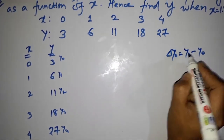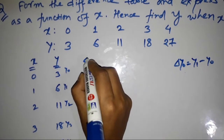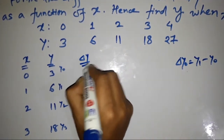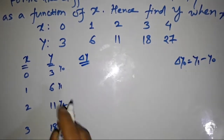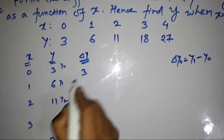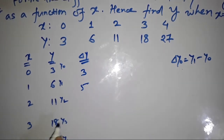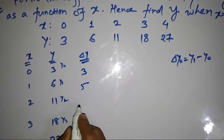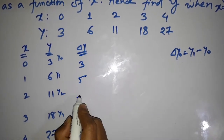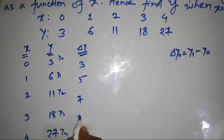We know that Y₁ minus Y₀ equals ΔY₀. So the ΔY column is: 6−3=3, 11−6=5, 18−11=7, 27−18=9.